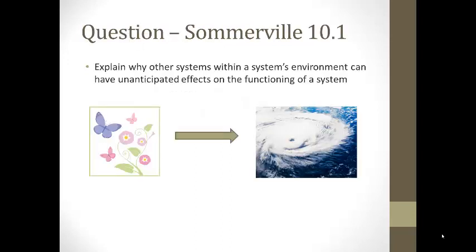One of the discussion questions in Chapter 10 is: explain why other systems within a systems environment can have unanticipated effects on the functioning of the system. There's a picture of a butterfly eventually causing a hurricane, taken from James Gleick's Chaos. The butterfly can have an impact on the entire weather system. For systems, the interface between two systems can cause this type of effect. For example, one system is upgraded to have a new data format for production data; the accounting system that uses that data will also need to be updated, and changes to the business process may require changes to both computer systems.